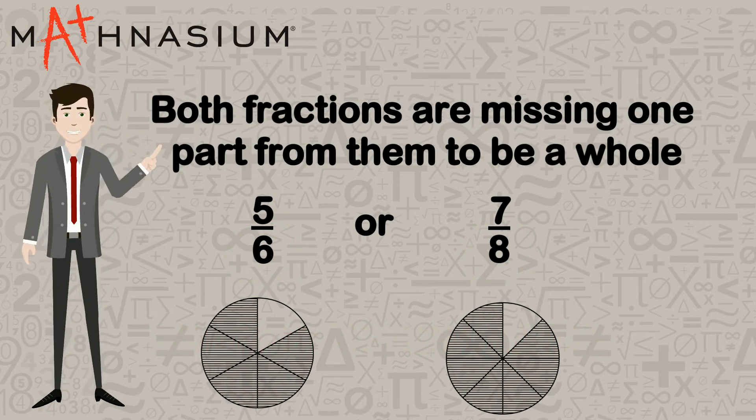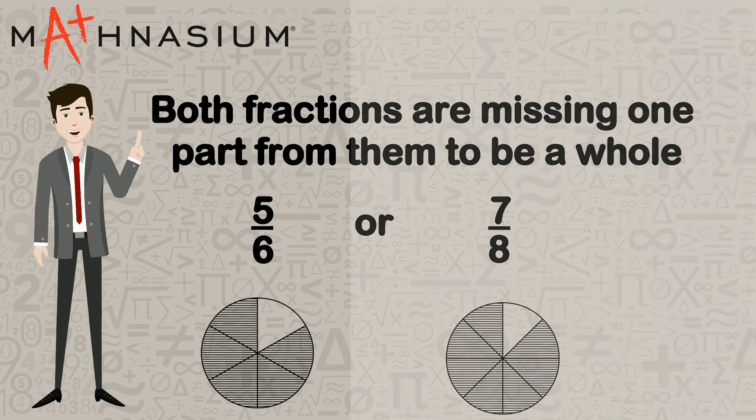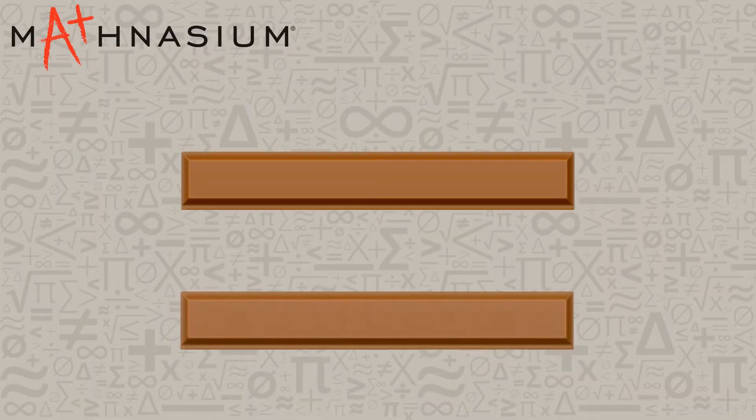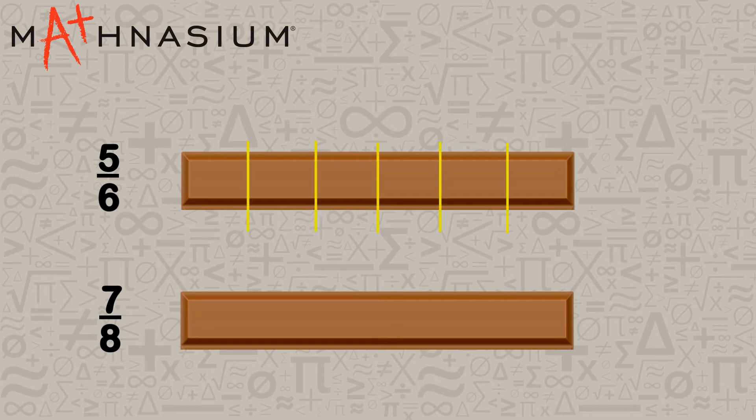Notice that both fractions are missing just one part from them to be a whole. If you have two candy bars of the same length, would you want a piece from the first one broken into 6 equal pieces, or from the second one broken into 8 equal pieces?